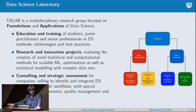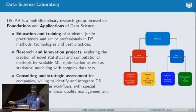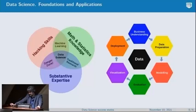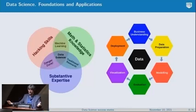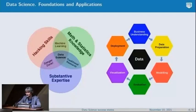This is the structure of the group. We have optimization, mathematics, statistics, machine learning, software engineering quality, information systems, etc. You probably know this figure — the foundations figure. The combination of statistics, mathematics, and computer science or hacking skills gives you machine learning. But machine learning is not the end of the story, and machine learning has nothing to do with the scientific domain. You need this substantive expertise, this scientific domain, in order to be a data scientist and do data science.